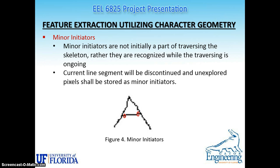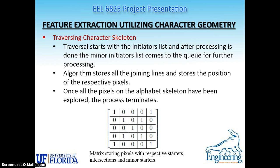The third part is the minor initiators. The minor initiators are not initially a part of the traversing skeleton; rather they recognize where the traversing is ongoing. The current line segment will be discontinued and unexplored pixels shall be stored at minor initiators. Traversing starts with the initiators list and after the processing is done, the minor initiator list comes to the queue for further processing. This algorithm stops all the joining lines and all the positions of the respective pixels. Once all the pixels on the alphabet skeleton have been explored, the process terminates. Here we have shown how the lines, the initiators, and the intersections are stored in a matrix showing the respective starters, initiators, and minor starters.